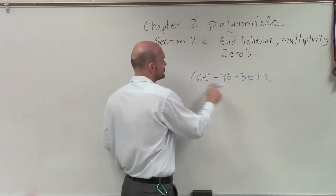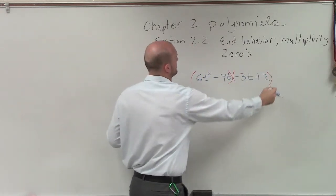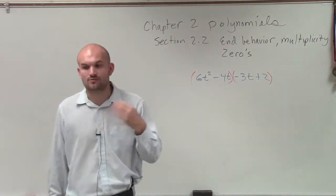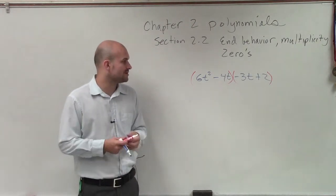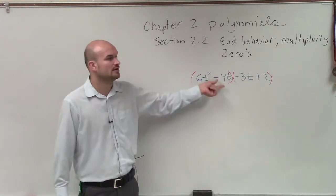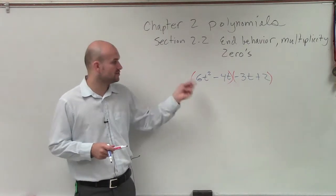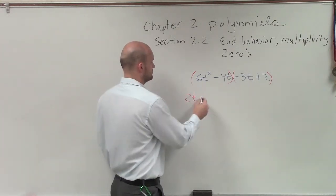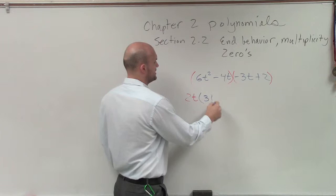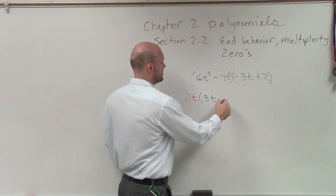So we go back to the grouping term. Let's group the first two terms and the last two terms. Now what I'm going to do is see what terms they have in common. So I look at these first two, 6t squared minus 4t squared. What do they have in common? And you can see, well, I can divide out a 2 and a t. So I'll factor out a 2t.